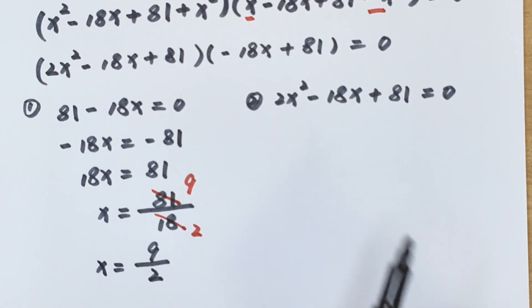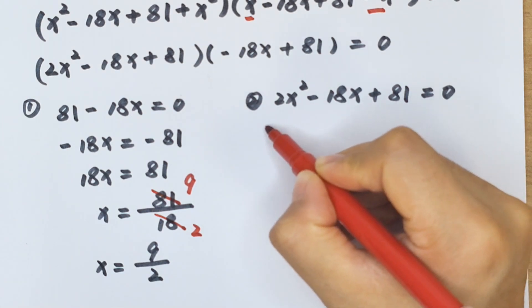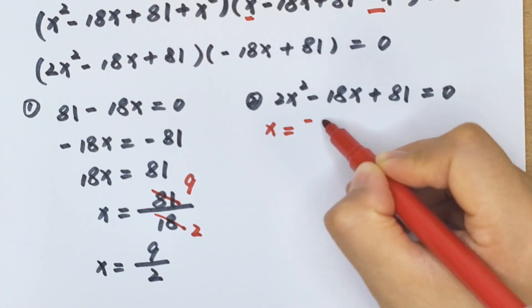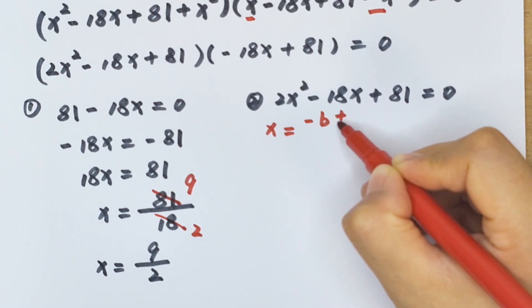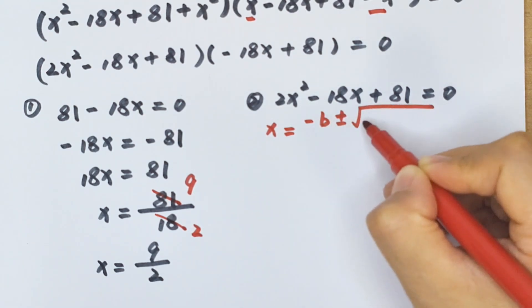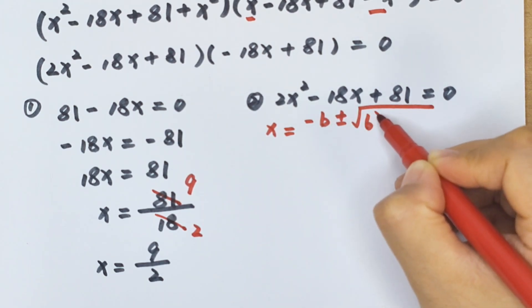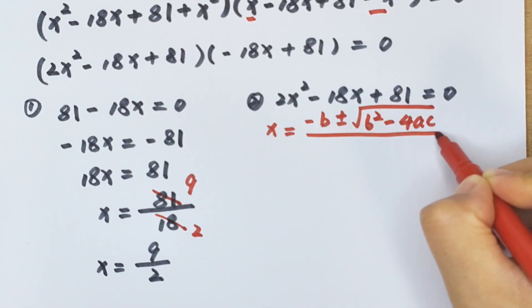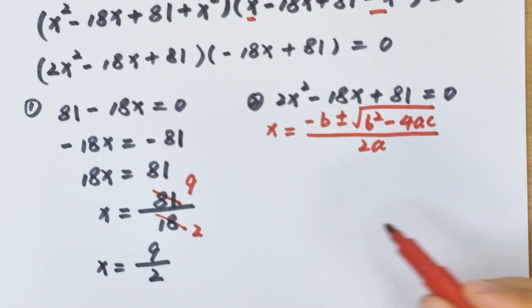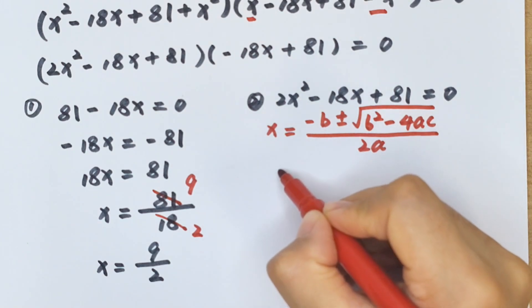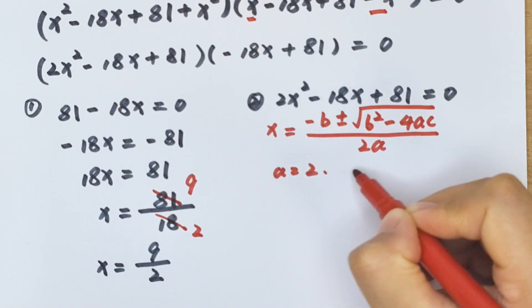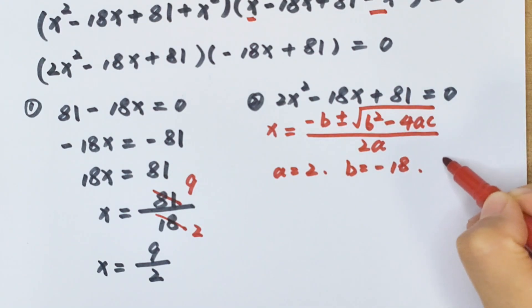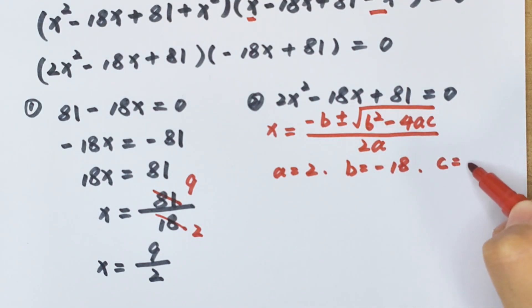For the second case, we apply the quadratic formula: x equals negative b plus or minus square root of (b squared minus 4ac), all divided by 2a. Here a is 2, b is negative 18, and c is 81.